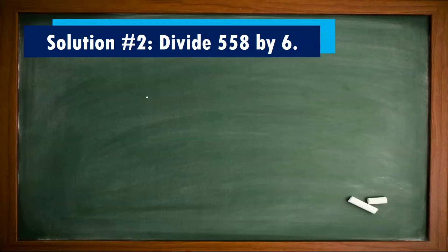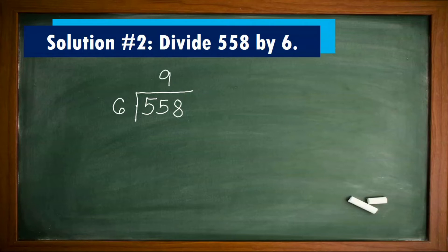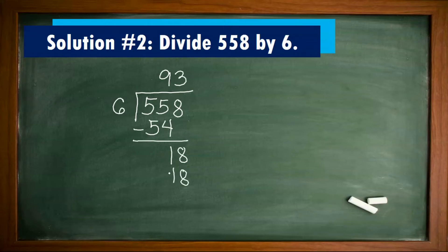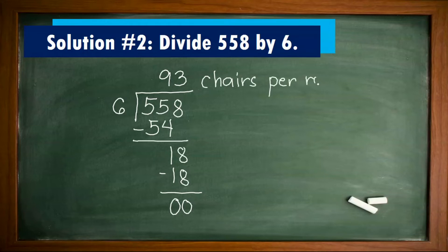Solution number 2: Divide 558 by 6. 55 divided by 6 equals 9; 9 times 6 is 54; 55 minus 54 equals 1. Bring down 8: 18 divided by 6 is 3; 3 times 6 equals 18; 18 minus 18 equals 0. Therefore, the chairs can be arranged into 6 rows — 93 chairs per row.